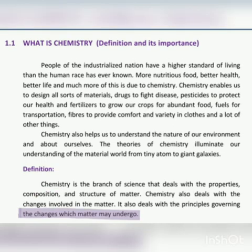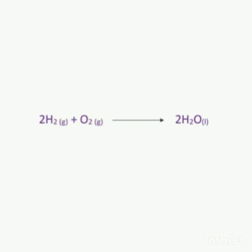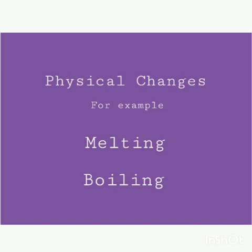Matter may undergo chemical and physical changes. In chemical changes, substances react with each other to form a new substance or compound — for example, hydrogen in gaseous form reacting with oxygen in gaseous form to produce water in liquid form. In physical changes, the property of a substance is changed — for example, ice changes into water by the process of melting.